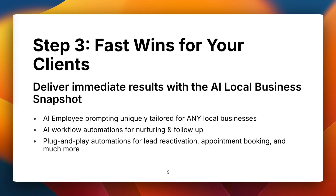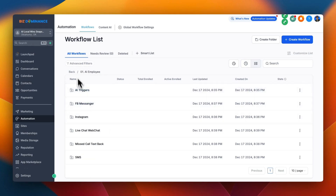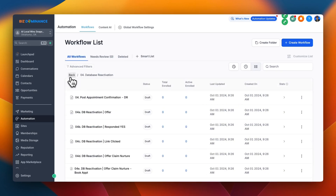Step three — and here's the game changer: getting fast wins for your clients. Your clients want results and they want them fast. That's why I created the AI Local Business Snapshot. With this snapshot, clients can hit the ground running. It includes AI workflow automations for messaging, nurturing, and client follow-ups, automations for lead reactivations, appointment scheduling, and more — already set up and ready to go. You'll also help them with A2P compliance registration, and I've got prompts that customize the AI employee for their specific business. We have review automations, appointment booking automations, database reactivation automations, and everything needed to help them get wins.